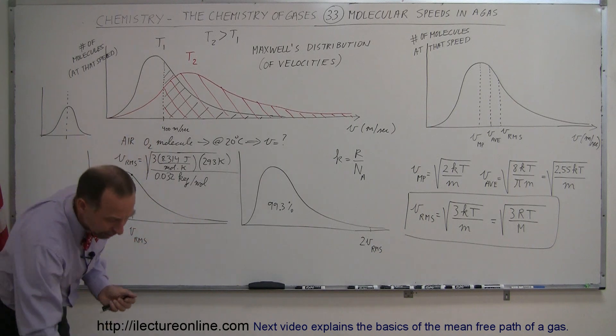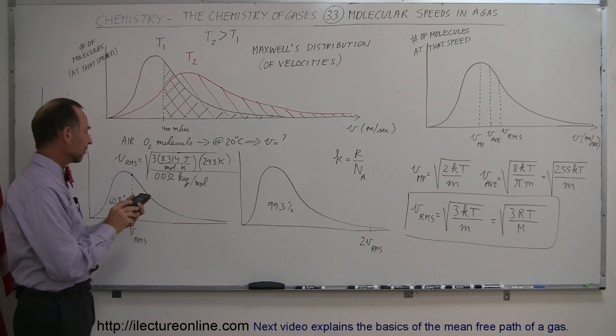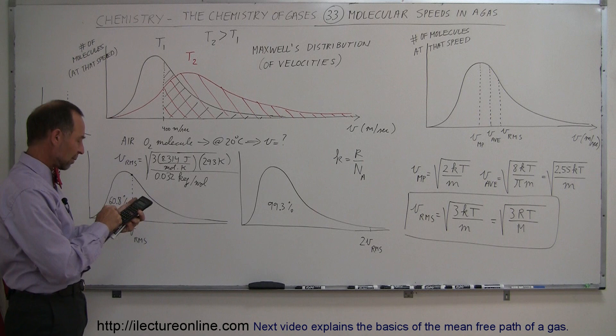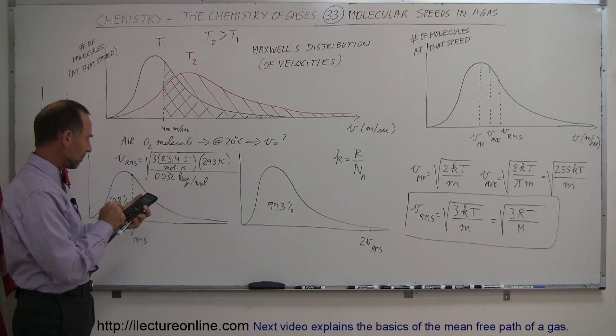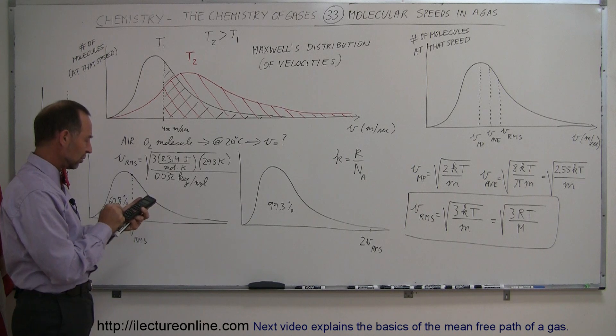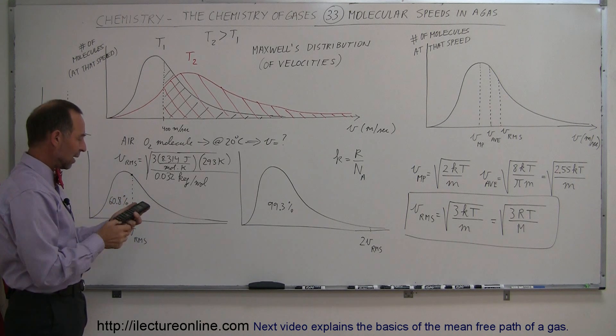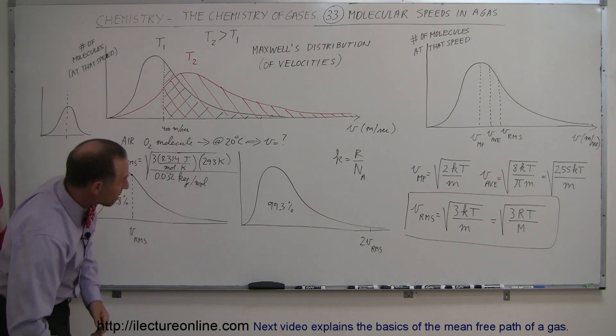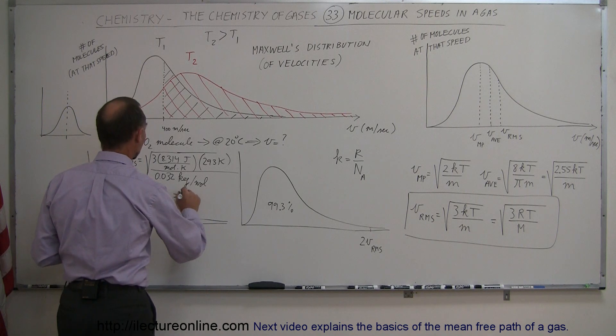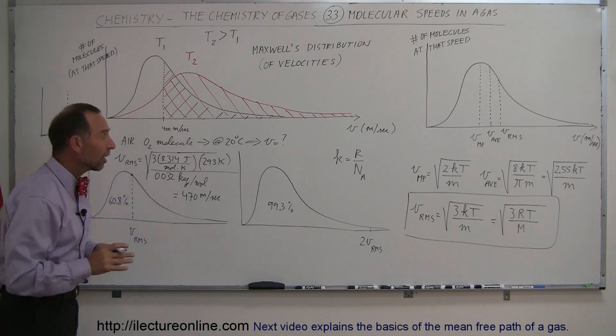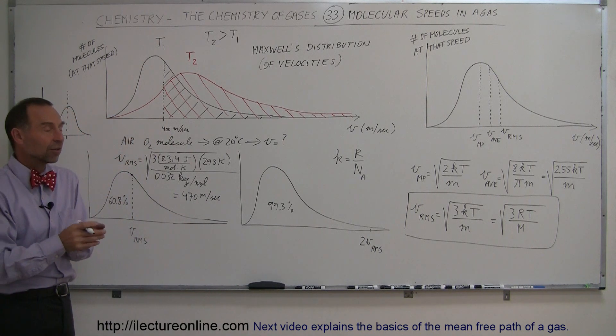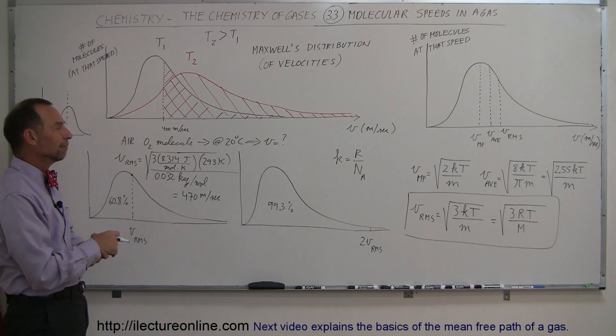And if we calculate that, let's see what we get for the velocity. We have 8.314 times 3 times 293 divided by 0.032, and then we take the square root of that and we get 470 meters per second. So that would be equal to 470 meters per second, which is the RMS velocity, the root mean square velocity, of oxygen molecules in the air.